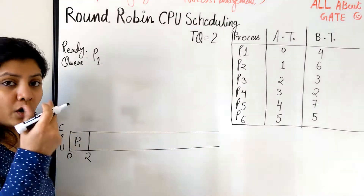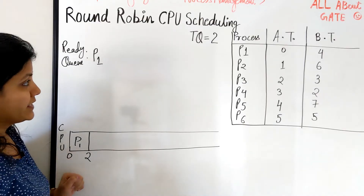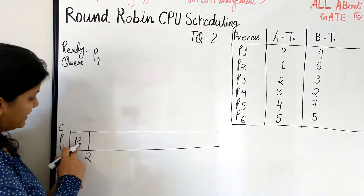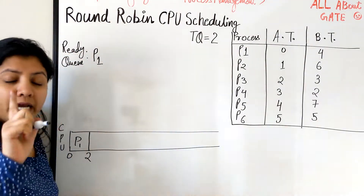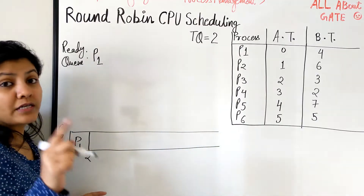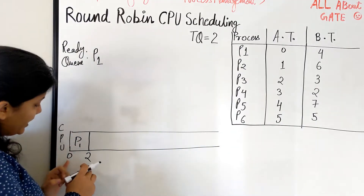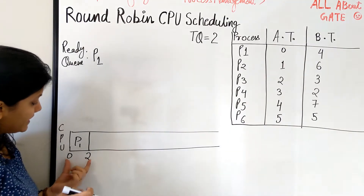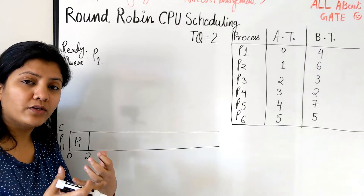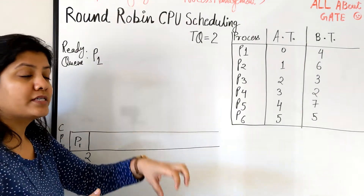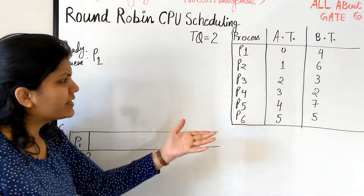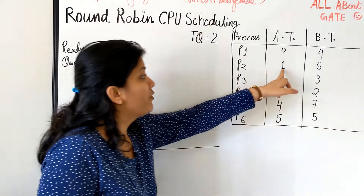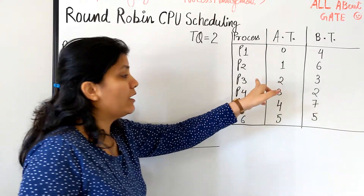We schedule P1 on the Gantt chart at time 0. The quantum is 2, so we give it two units of burst. P1 needs four burst units total, so it's not going to finish in one quantum — P1 will go back in the ready queue. Secondly, since all processes are not available at the same time, while executing P1, other processes may arrive. At time 1, P2 arrives; at time 2, P3 arrives.